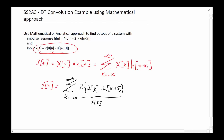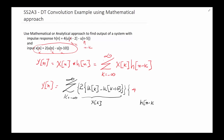This is x of k. Now we need to figure out what h of n minus k is, which basically says: everywhere in the h of n equation where you see n, replace it with n minus k. So it's going to end up being four times — this becomes n minus k, and this becomes n minus k — so it will be four times u of n minus k minus two minus u of n minus k minus five.